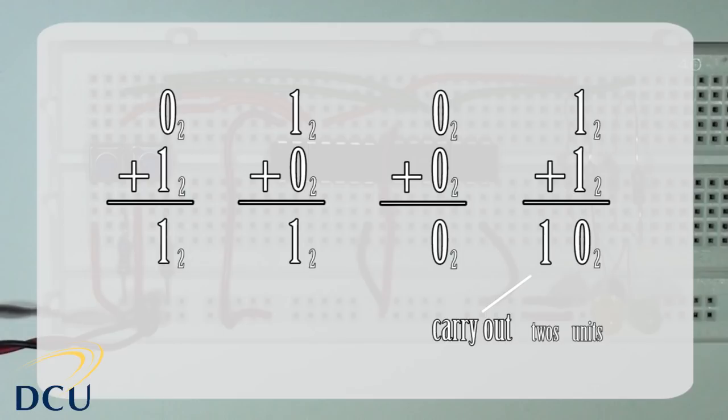In binary: 0 plus 1 equals 1, 1 plus 0 equals 1, 0 plus 0 equals 0, and finally 1 plus 1 equals 0 with a carry out of 1. This is the basis of the half adder, so we'll turn this into a truth table.